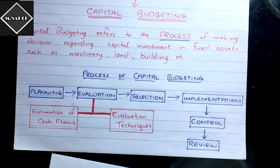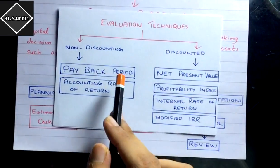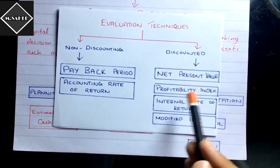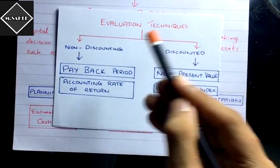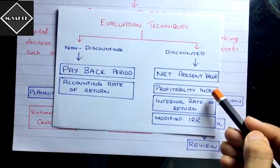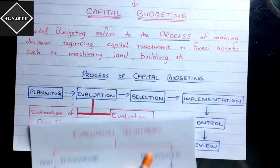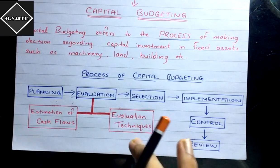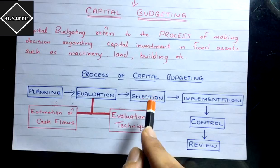The non-discounting techniques are payback period and accounting rate of return. The discounting techniques include net present value, where we discount the future cash flows to present value; profitability index; internal rate of return; and modified internal rate of return. These are the evaluation techniques we are going to use, and most of the problems in this chapter are based on them.